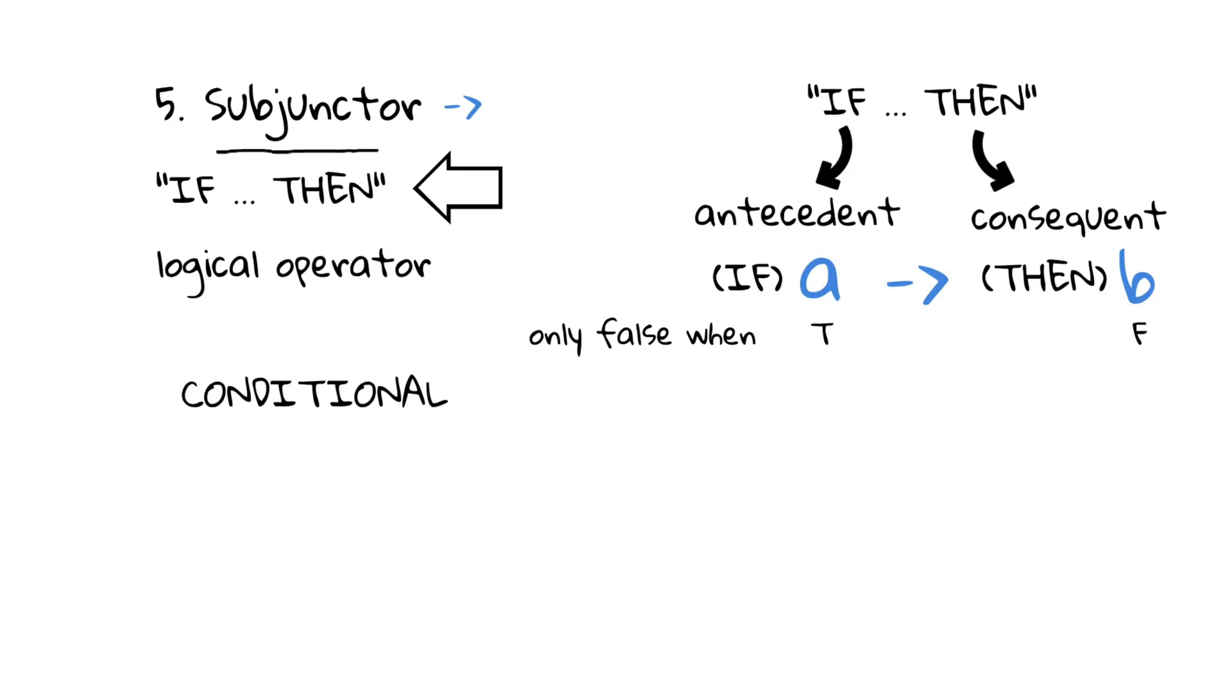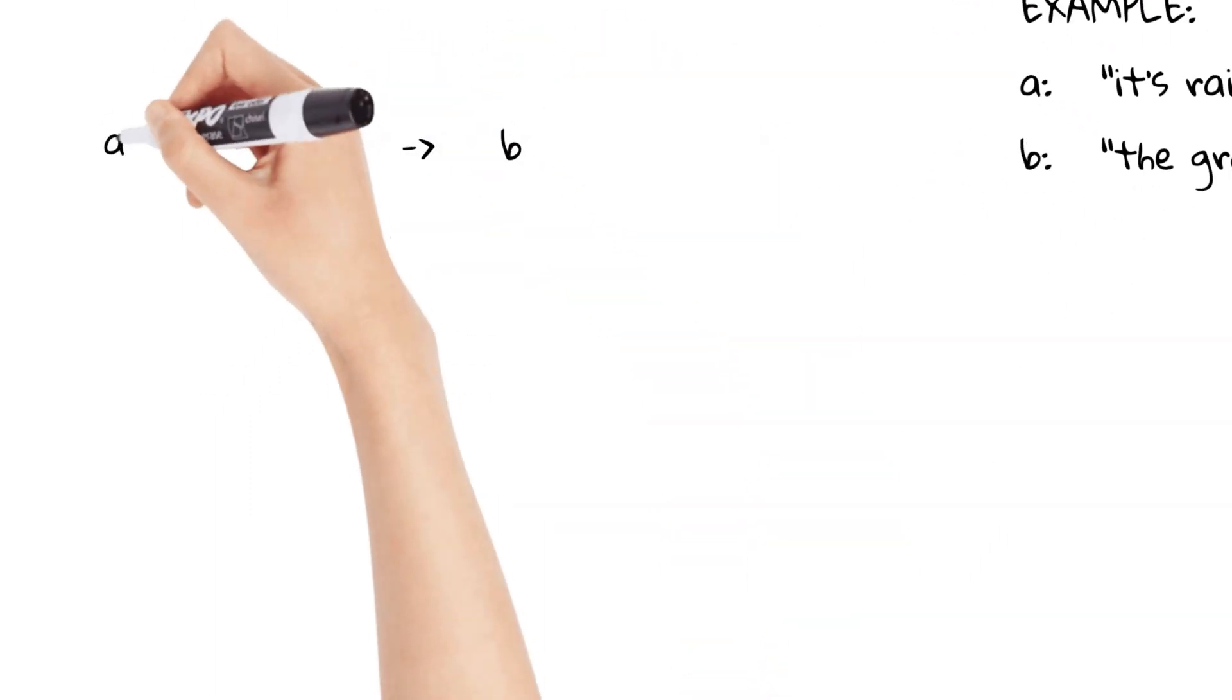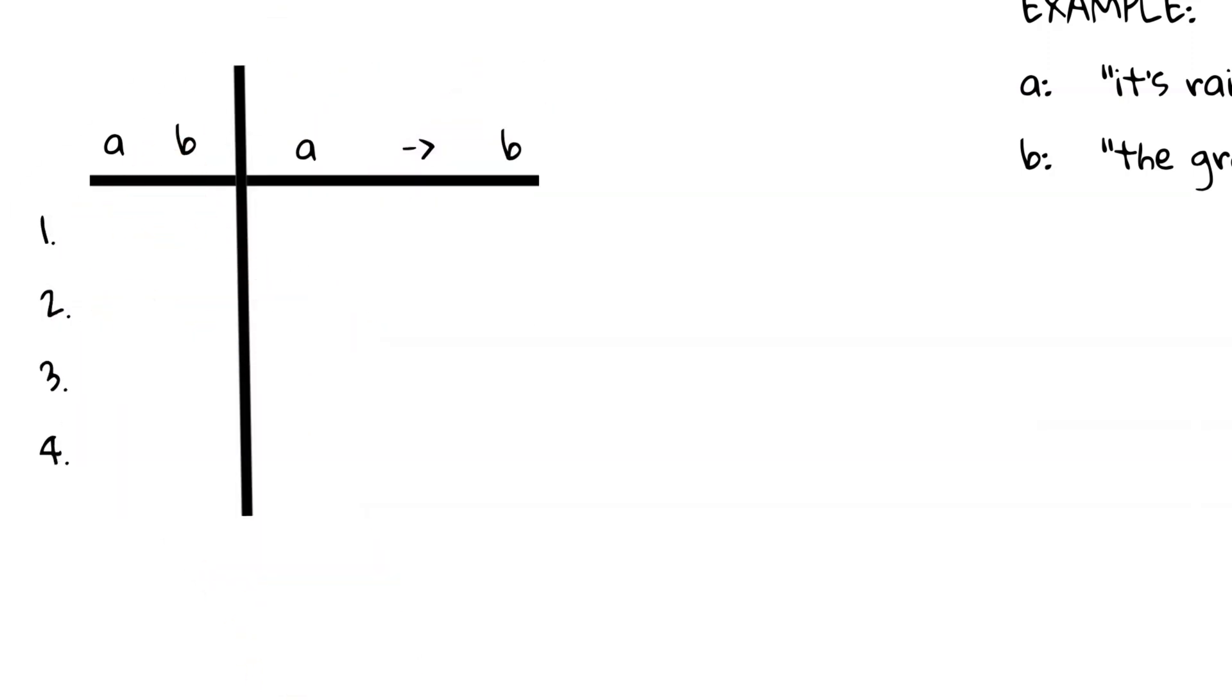Let's illustrate this with an example. Let's say A stands for it's raining. Let's also say B stands for the ground is wet. Using the subjunctor, we can say, if it's raining, then the ground is wet, A subjunctor B. There are four scenarios for the truth values of A and B: one, A is true and B is true; two, A is true and B is false; three, A is false and B is true; and four, A is false and B is false. These four scenarios cover all the possible combinations. We can also display these scenarios in what is called a truth table, with our results for each scenario, or line, on the right side. In this particular truth table, in each of the four scenarios, A is the antecedent and B is the consequent.